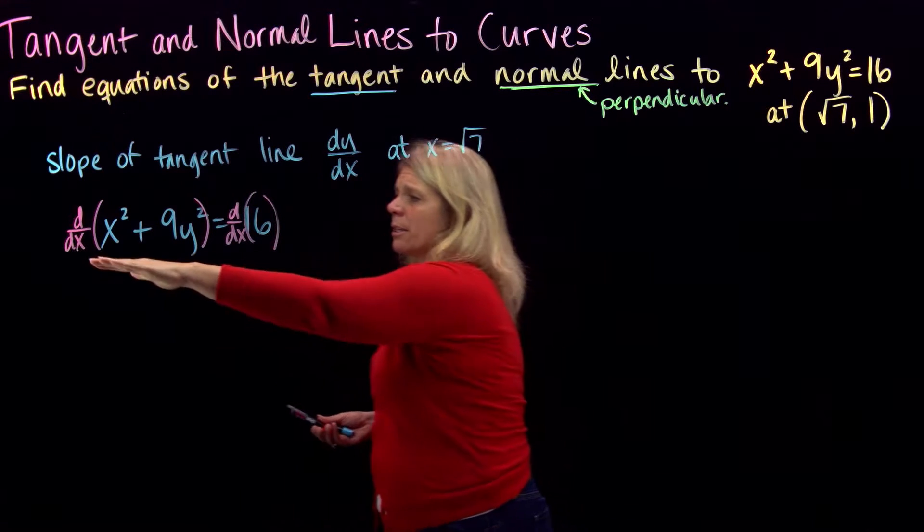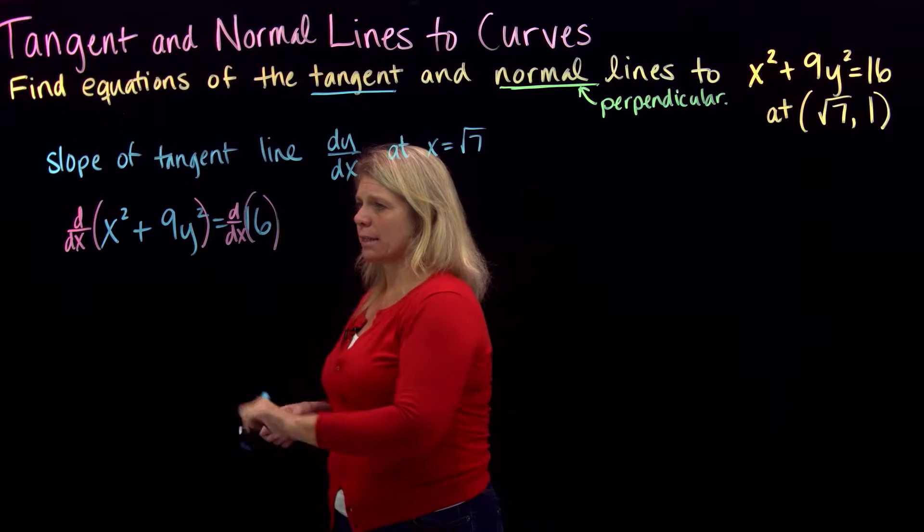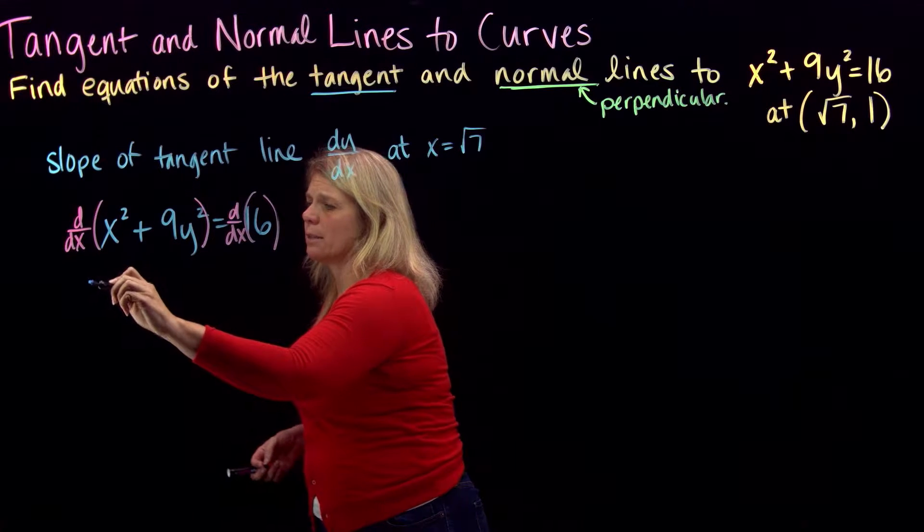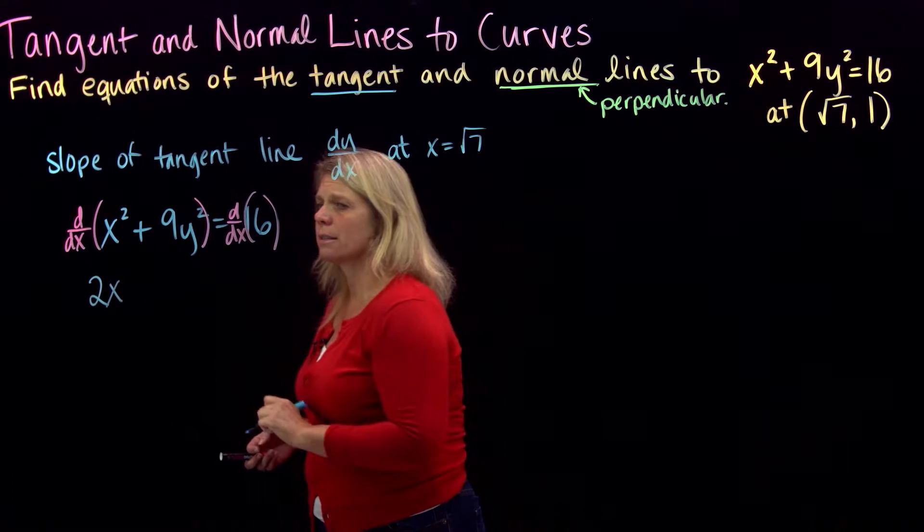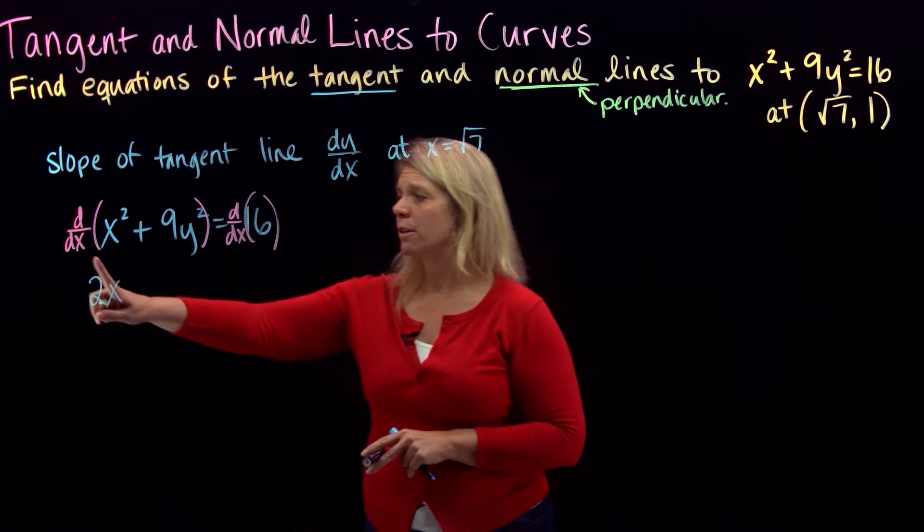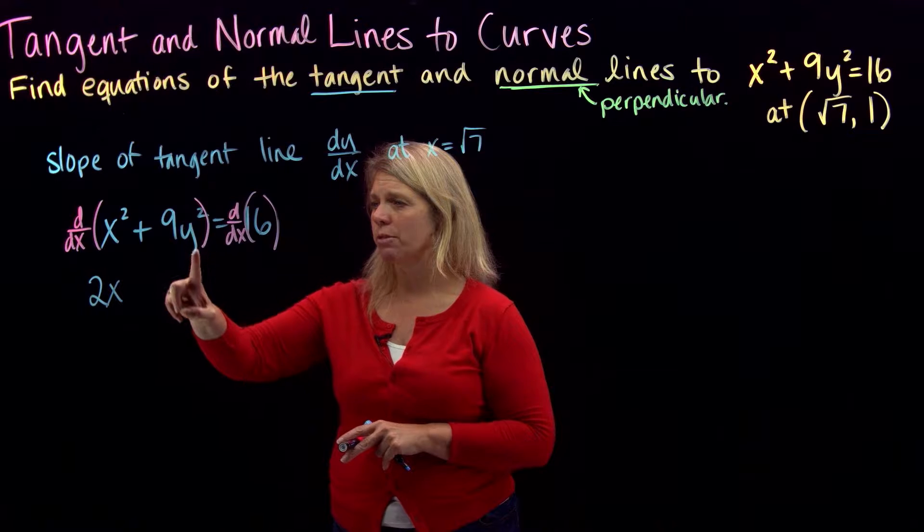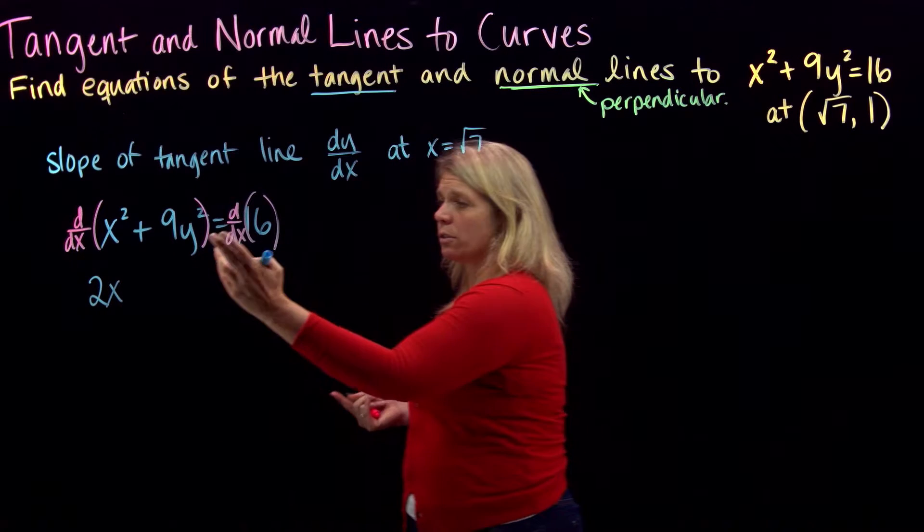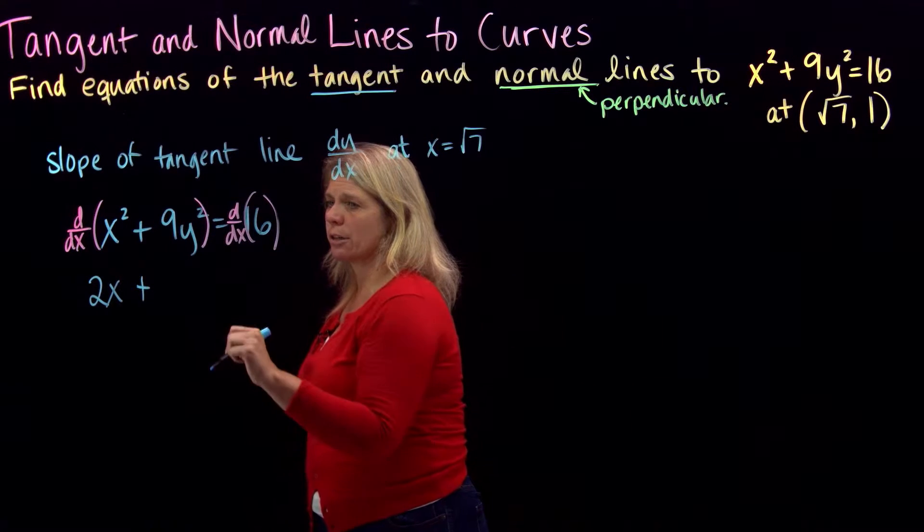Okay, so when I differentiate the left side of the equation with respect to x, the derivative of x squared, that's a pretty easy derivative, 2x. When I differentiate this term involving a y, and I'm differentiating with respect to x, remember, we're treating y as a function of x. So this is where we're going to need the implicit differentiation.